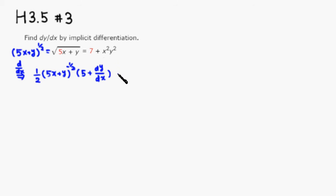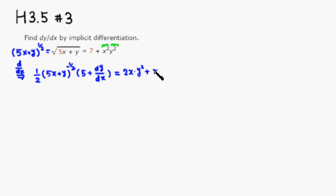The derivative of the right-hand side: the derivative of 7 is 0. For the next term we use the product rule — this is the first and second factor. Derivative of the first is 2x times y squared, plus x squared times the derivative of the second, which is 2y times dy/dx.